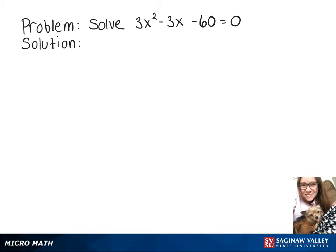We're going to solve 3x² - 3x - 60 = 0. The first thing we want to do is factor out a 3, leaving us with 3(x² - x - 20) = 0.